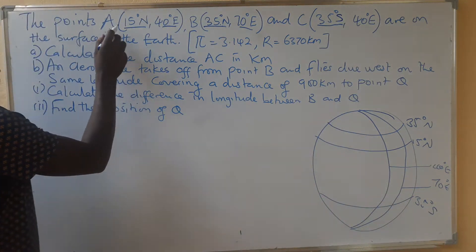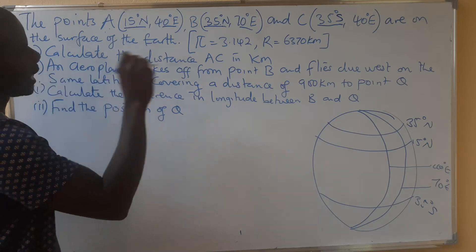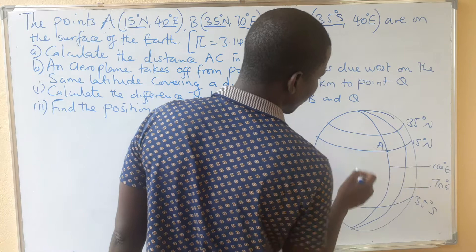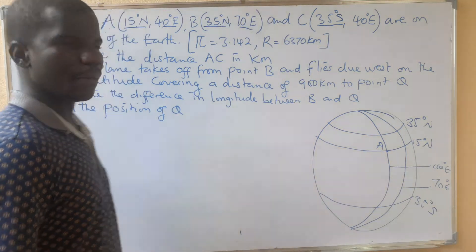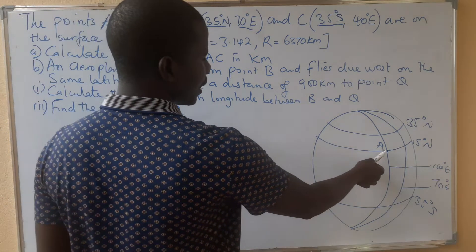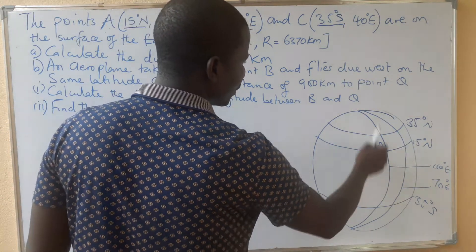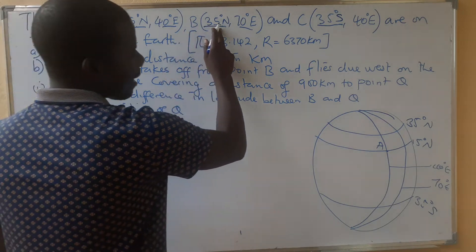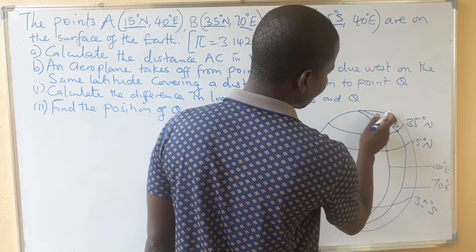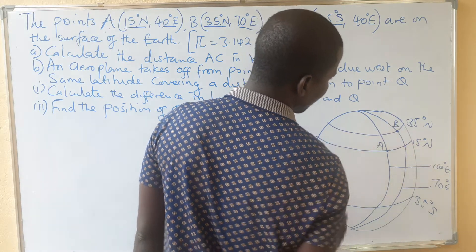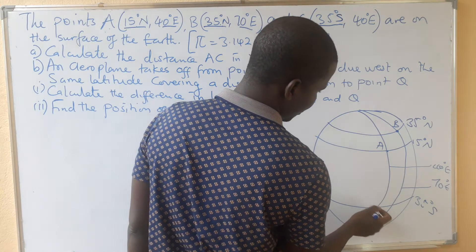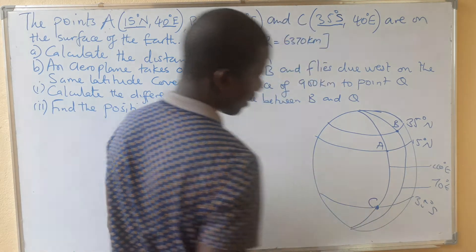So where are the points? A is our 15-degree latitude — this is our A. This is how you state the position of a point: you start with the latitude and then the longitude. B is 35, 70 — so our B is here. Then C is here — this is where our C is going to be.